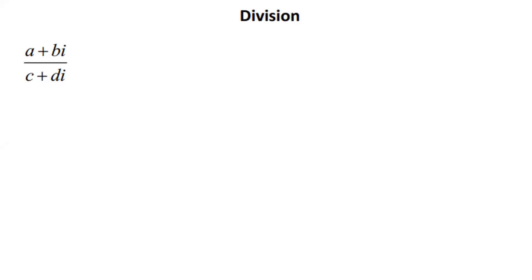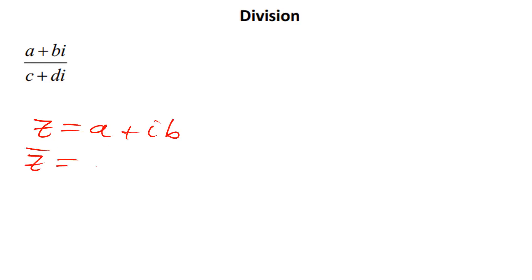Division of complex numbers involves what is known as a conjugate, which we learned in the previous session. Let me remind you about the conjugate — it's straightforward. When you have a complex number z = a + ib, its conjugate is found by simply changing the sign in between. If you have a plus, you put a minus; if you have a minus, you put a plus.